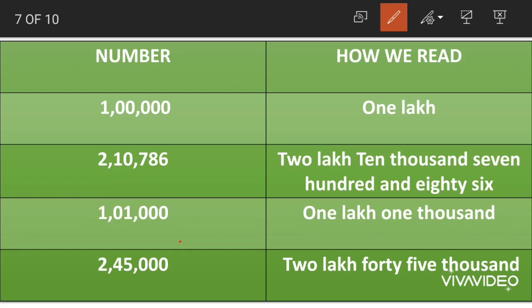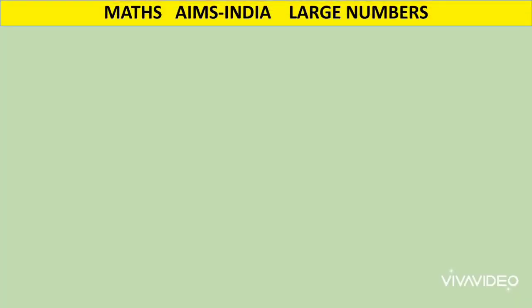The fourth number is 2,45,000. Place values: ones, tens, hundreds, thousands, ten thousands and lakhs. 2 is at lakhs place — read as two lakhs. 4 and 5 together mean 45 in the thousands period — read as forty-five thousand. The zeros have no value. So 2,45,000 is read as two lakh forty-five thousand.